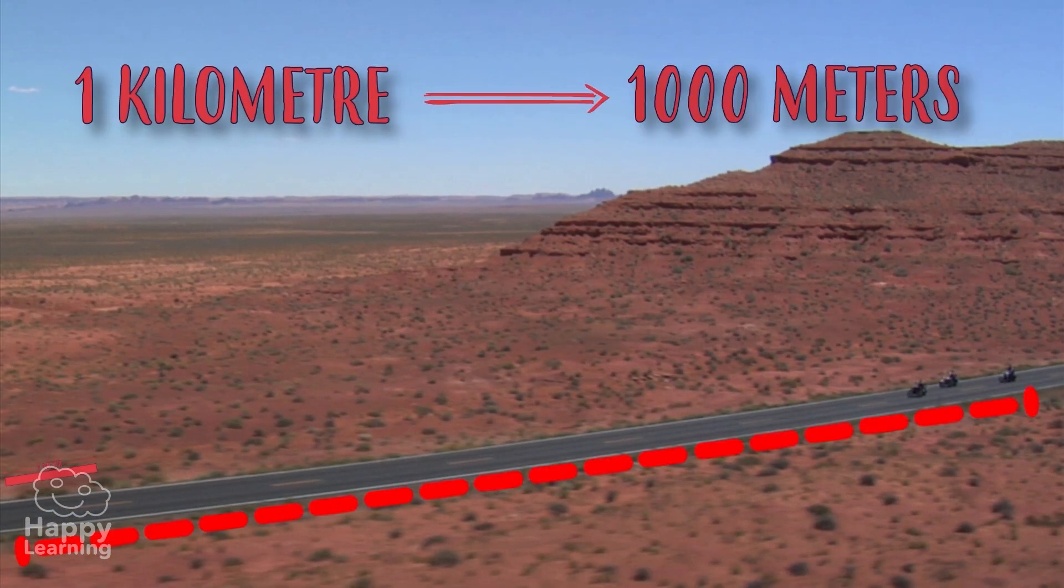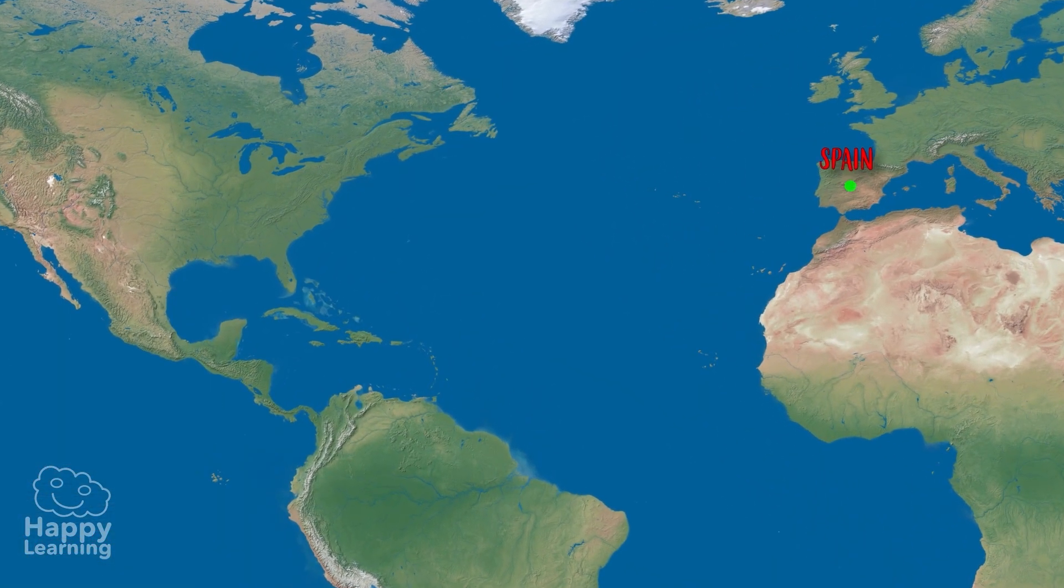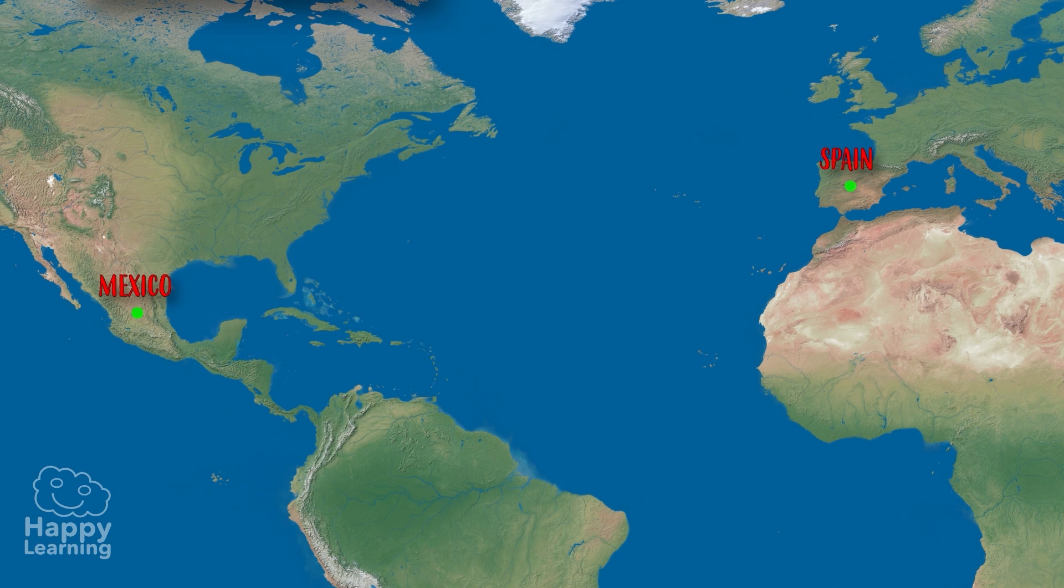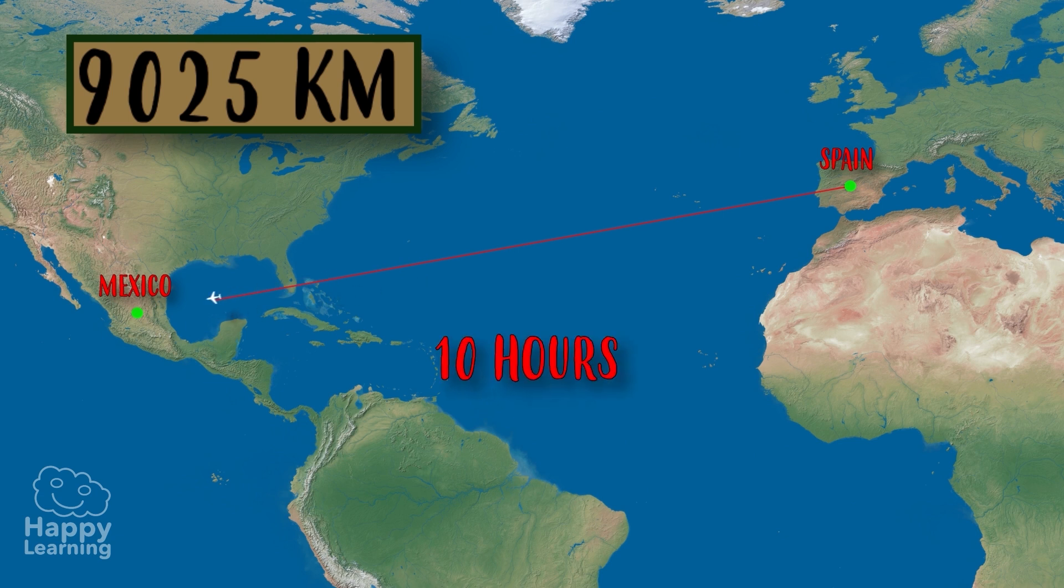To measure larger distances than a meter, we use a kilometer, that is exactly a thousand meters. Did you know how much distance there is between Spain and Mexico? Well, it's 9,025 kilometers, and we take about 10 hours traveling this distance by plane.